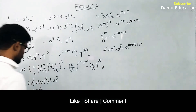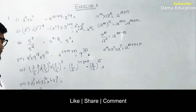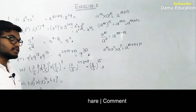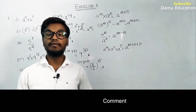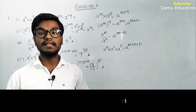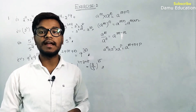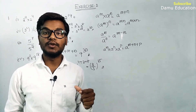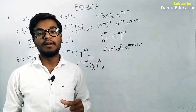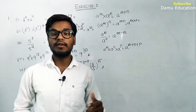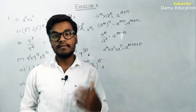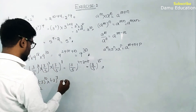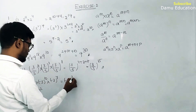Next question: minus 3 whole power 3. We need to know the sign rule: minus 1 to the power of an even number equals positive, and minus 1 to the power of an odd number stays negative. We split this as minus 1 whole power 3 into 3 power 3.